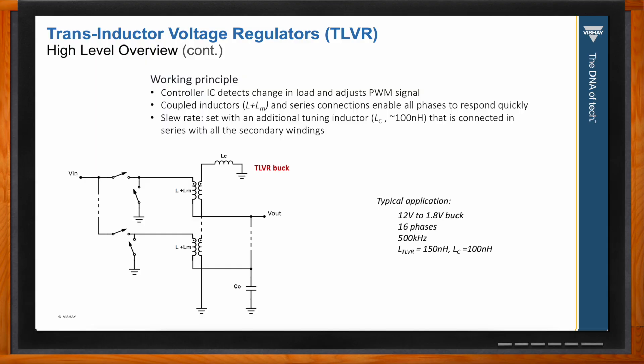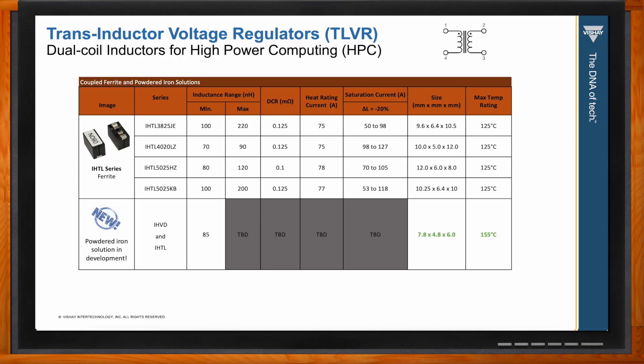For the TLVR phase, Vishay has predominantly ferrite offerings available, with a powdered iron solution in development. The IHTL series spans an inductance range of 70 to 220 nanohenries, offering up to 78 amps of current rating, with a few models available depending on the footprint and height requirements needed.